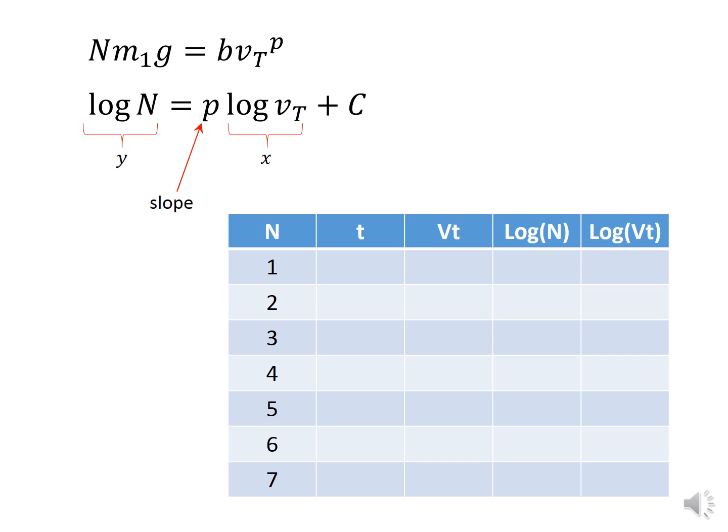And that, of course, equals our model of the drag force B, a constant times terminal speed to the power P. And again, our goal is to determine P. So taking the log of both sides and moving constants all onto the right side,